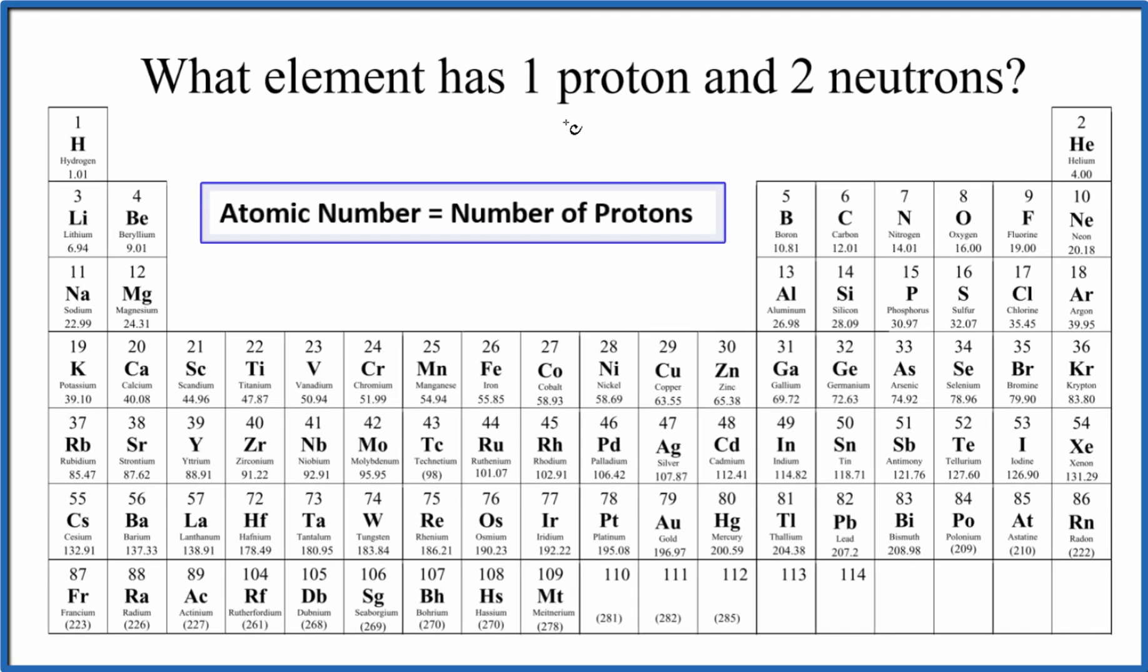Let's figure out which element has one proton and two neutrons. We use the periodic table here to do that.